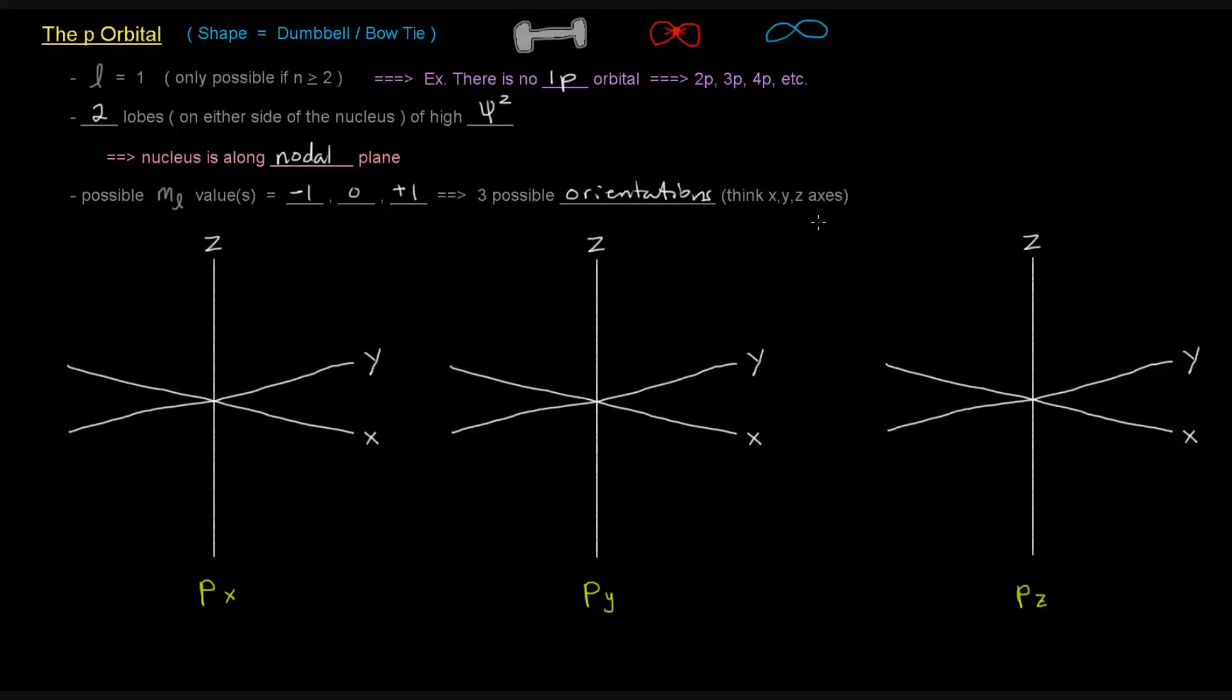So we have to think about the x, y, and z axes. We can think about the p orbital lying on the x-axis, on the y-axis, or on the z-axis. So that's what we'll see here.